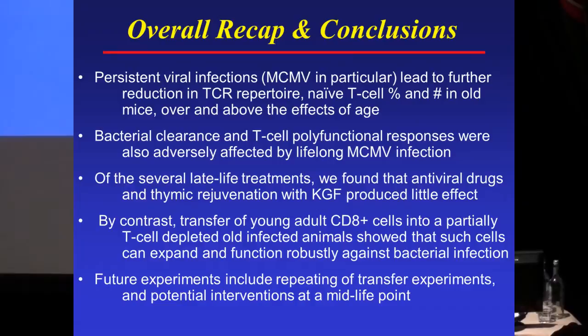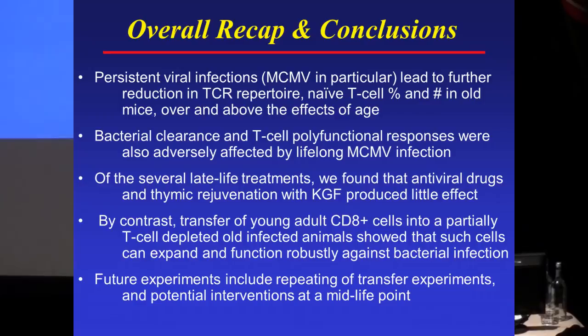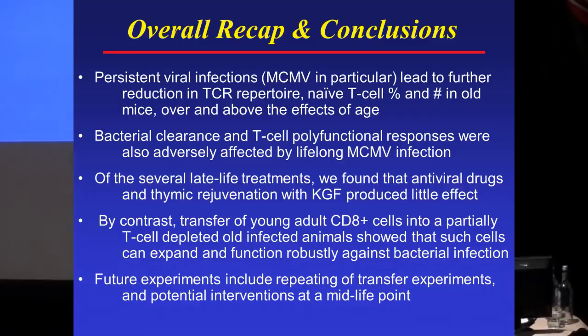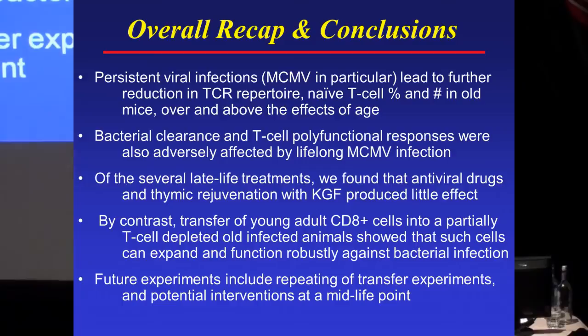The overall recap: persistent viral infections and MCMV in particular lead to further reduction in T cell receptor repertoire, naive cell numbers and percentages in old mice, over and above the effects of age alone. Bacterial clearance and T cell polyfunctional responses are also adversely affected by lifelong persistent viral infection. Of several late-life treatments, antiviral drugs and KGF produced little effects, probably because they were advertised as something better than they really are. By contrast, transfer of young adult CD8 T cells into a partly depleted old infected animal showed that such cells can expand and function robustly. It might also make sense to try these interventions at a mid-life point rather than late in life.